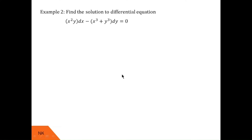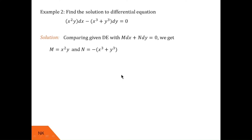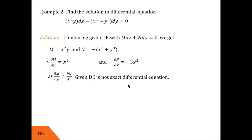First of all, we will check whether this differential equation is exact or not. We compare it with M dx plus N dy equals 0. Here, M is x²y and N is −(x³ + y³). Therefore, ∂M/∂y is only x² and ∂N/∂x is −3x². Since these expressions are not the same, ∂M/∂y is not equal to ∂N/∂x, and hence the given differential equation is not an exact differential equation.